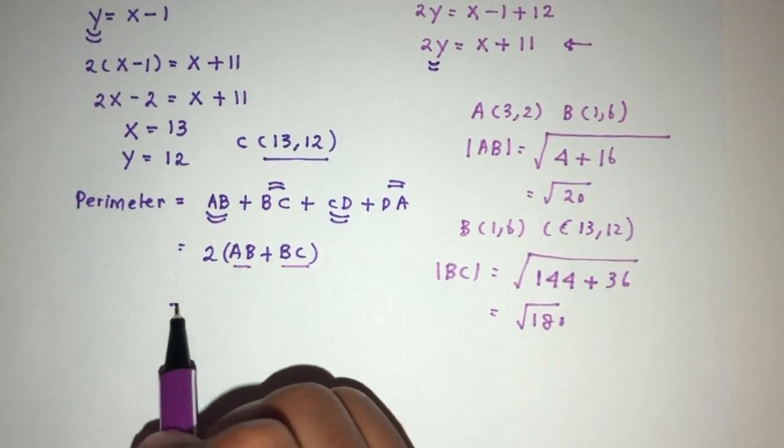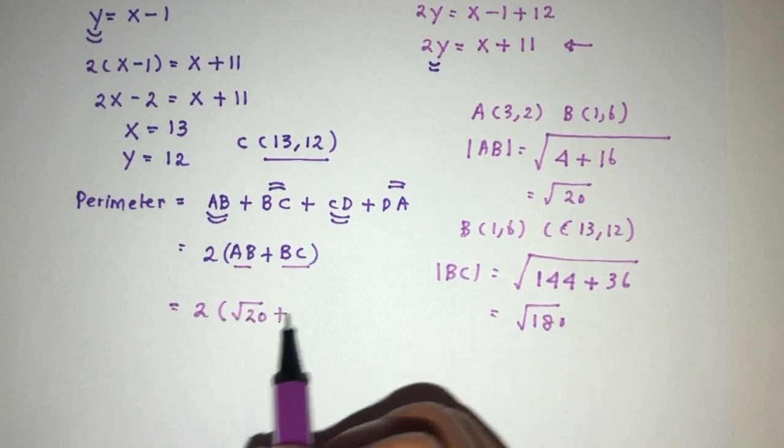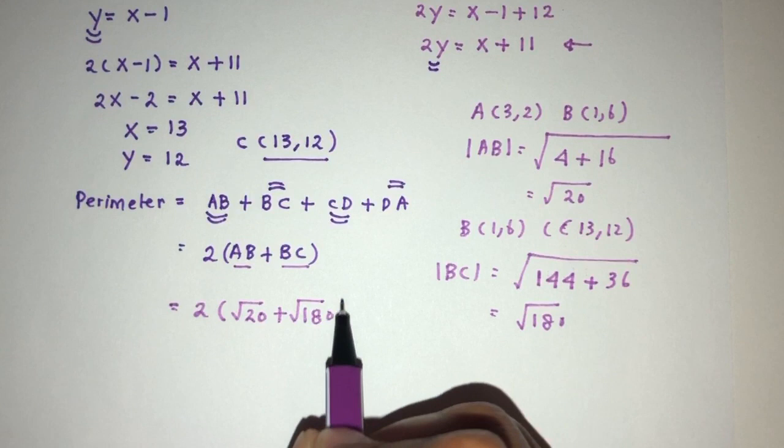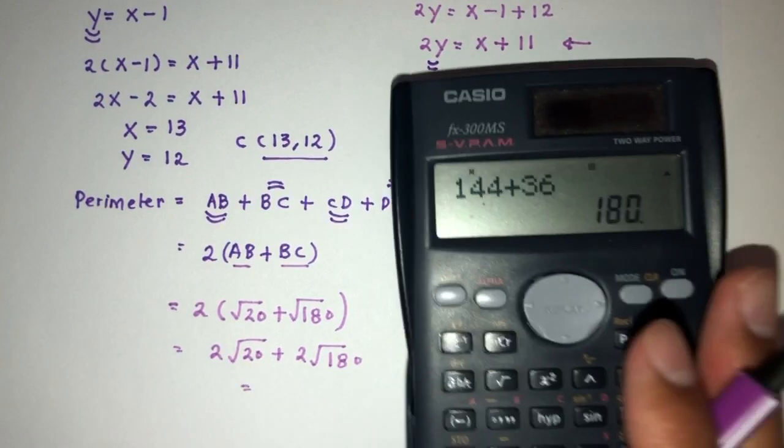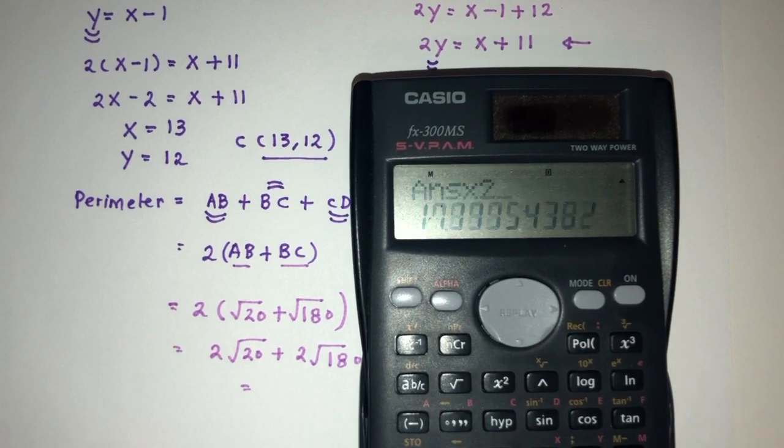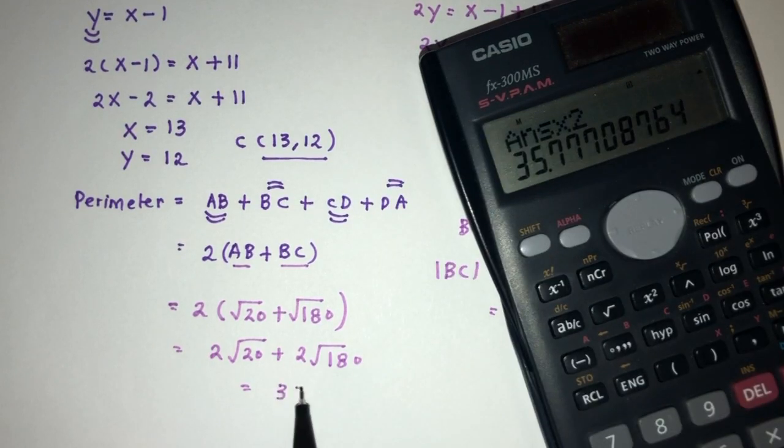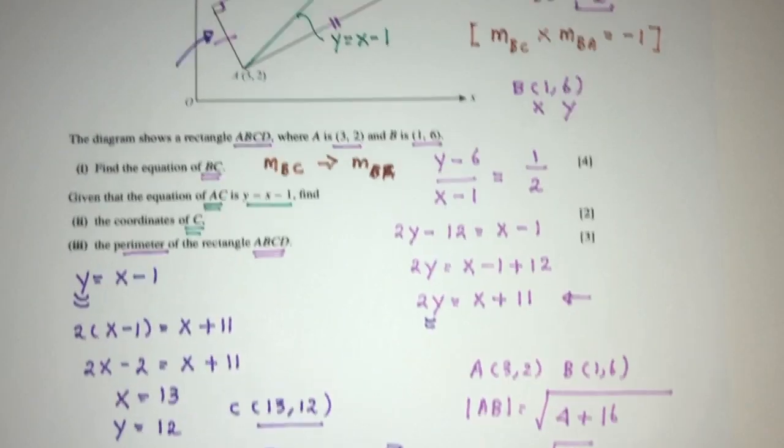So let's add them up together. That will be 2 times root of 20 plus root of 180. That will be 2 root of 20 plus 2 root of 180. However, we can always provide the value. So root of 20 plus root of 180 times 2. That will be 35.8 correct to 3 significant figures for non-exact values. That will be units for the perimeter. And this is the question involving geometry.